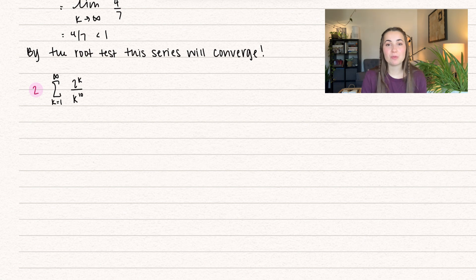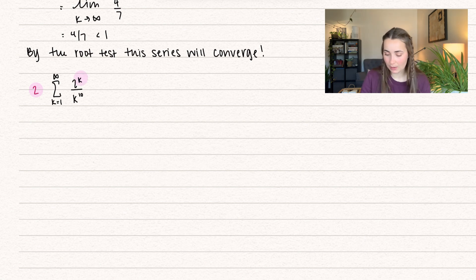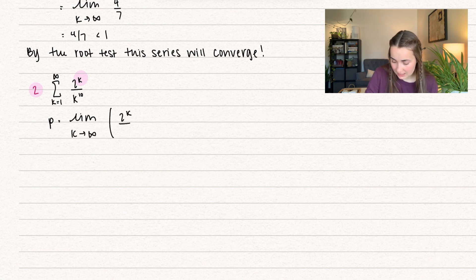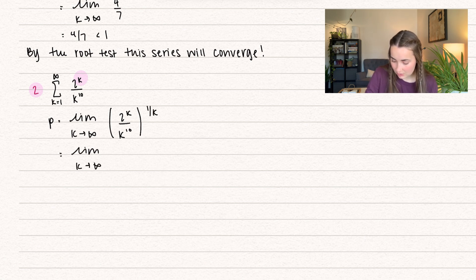Here's our second example. We have the summation k equals 1 to infinity of 2 to the power of k divided by k to the power of 10. I see that power of k, which tells us to apply the root test. So we take the limit as k approaches infinity — another way to write the kth root is to raise a sub k to the power of 1 over k, which is exactly the same thing.